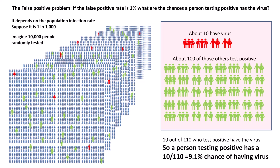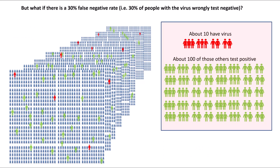Now that was a visual explanation of Bayes' theorem. But what if there's a 30% false negative rate — in other words 30% of people with the virus wrongly test negative? It's still the case that about 10 of the 10,000 have the virus, and it's still the case that about 100 of the others will wrongly test positive. The difference now is that about three of those with the virus will wrongly test negative, so about three of these won't show up as positives.